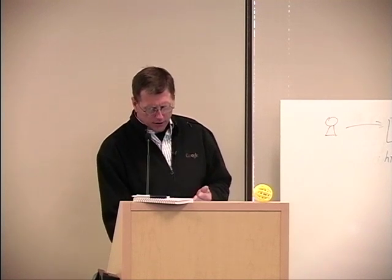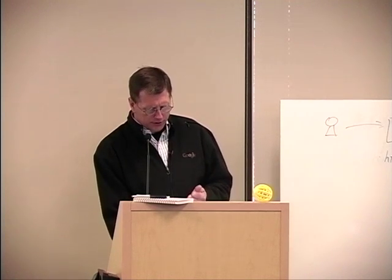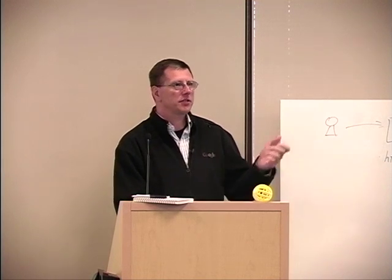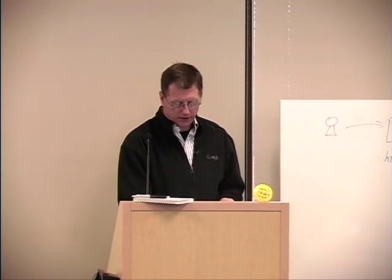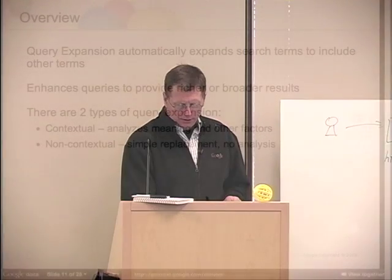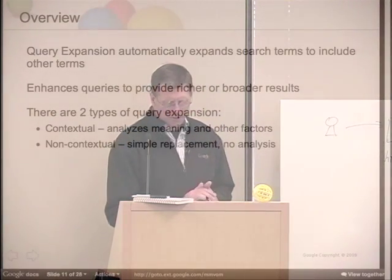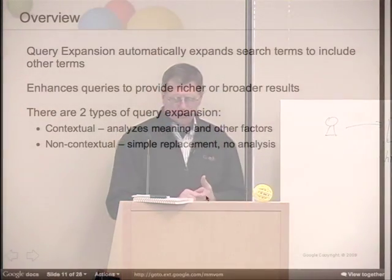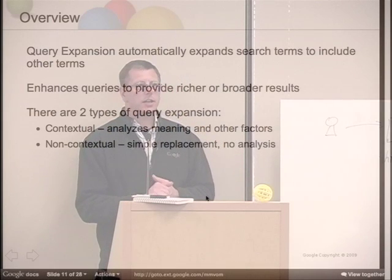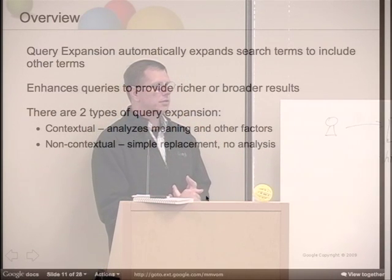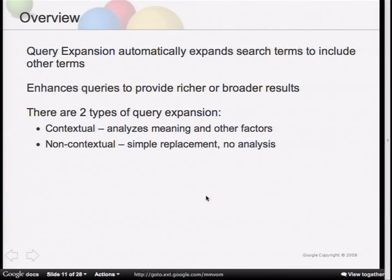Query Expansion automatically expands search terms to include other terms. Users run the search once and they get all these other terms added in automatically. There are two types: contextual and non-contextual. The contextual type analyzes the meaning of the term you're using - it looks at the surrounding words to determine what you really mean.